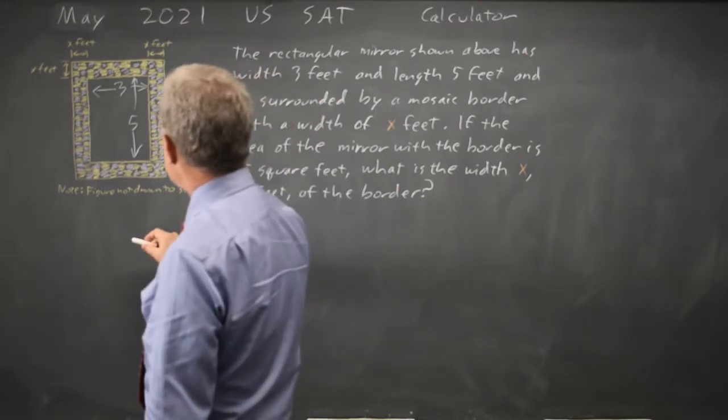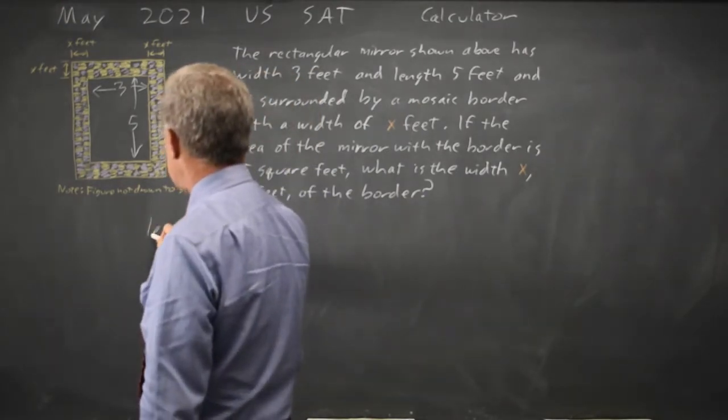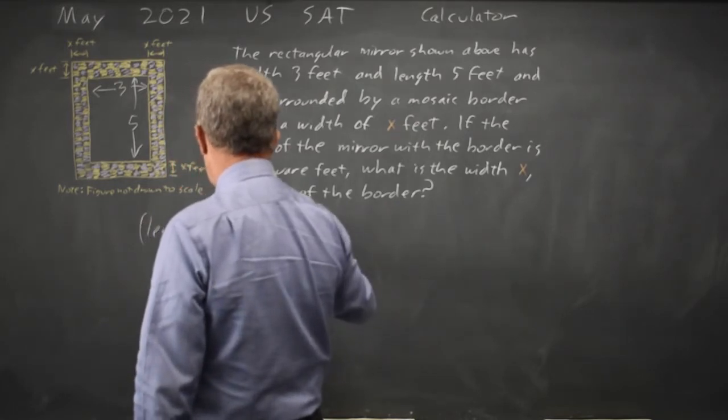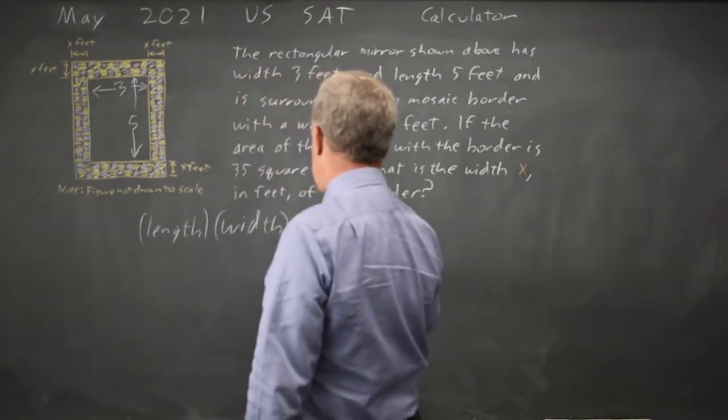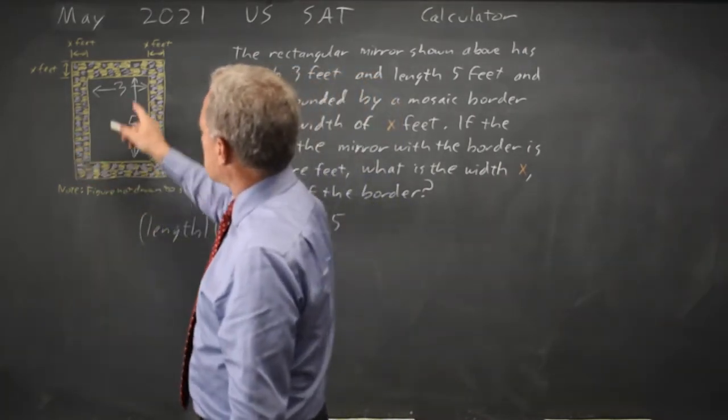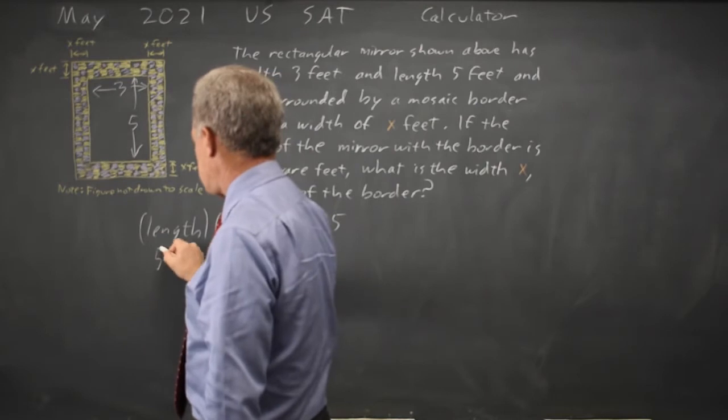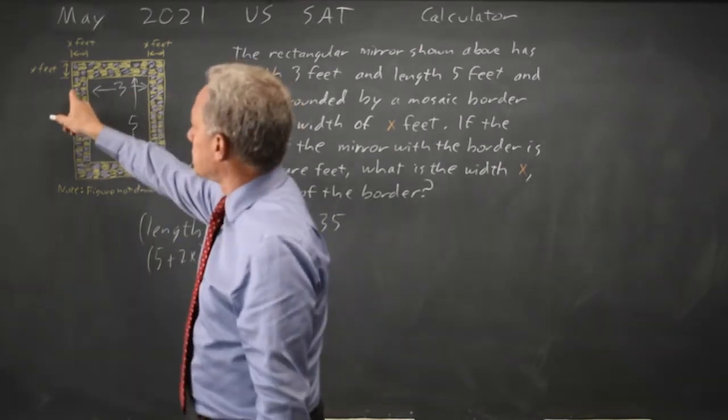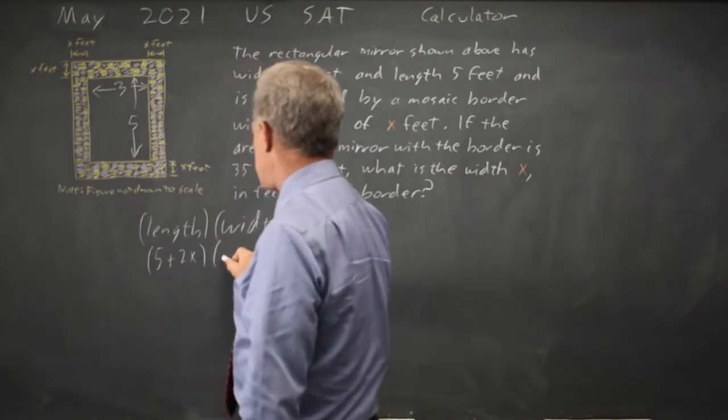And the area of the mirror plus the frame is 35 square feet. So the area is length times width and that's given as 35. And the length I'll say is five plus 2X and the width is three plus X on the left and X on the right, so three plus 2X.